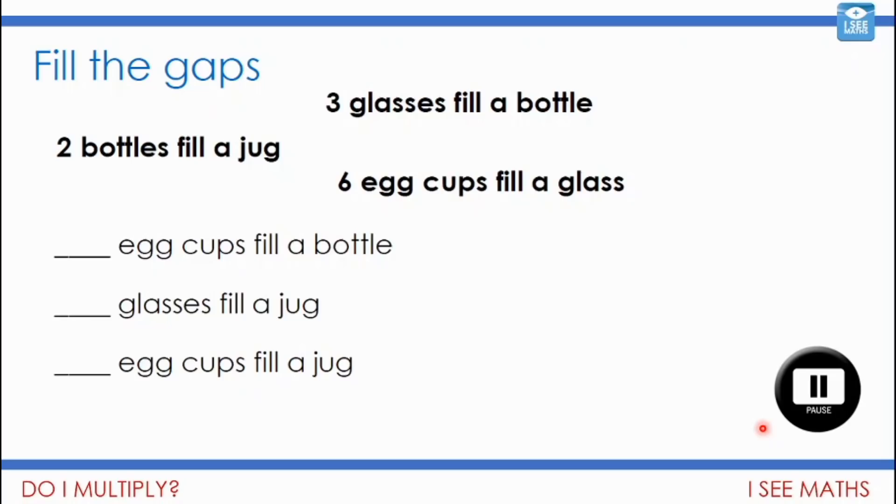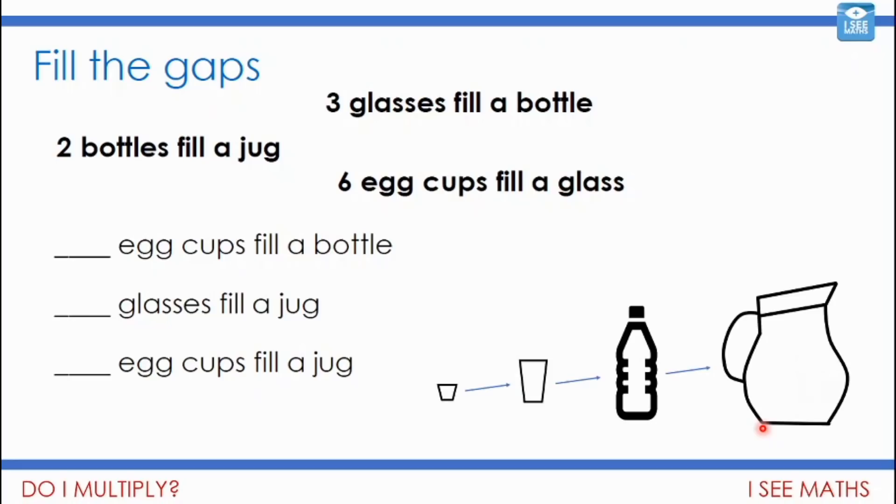Okay, let's have a look. I often find it easier, again, just to kind of draw a picture. So I've got here, this is my little picture of an egg cup, a glass, a bottle, and a jug. I'm putting them, first of all, in order of size. So how many egg cups to fill a bottle? Well, I'd first of all have to think how many egg cups to fill a glass. That's six. And then three glasses for this bottle. So it's almost like three lots of six. So that's 18.